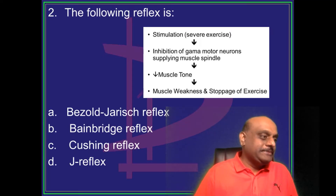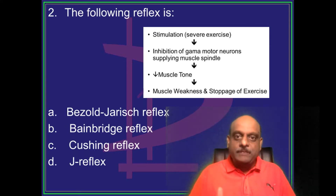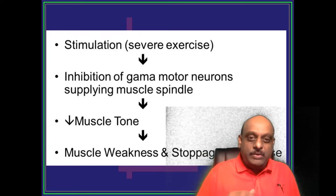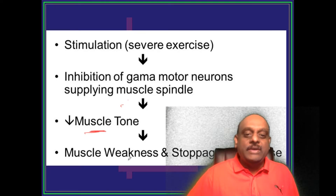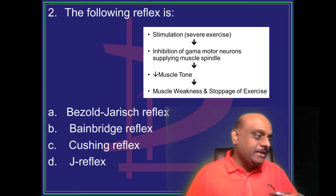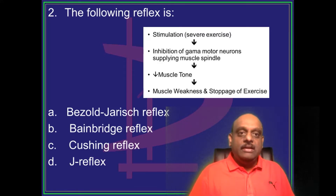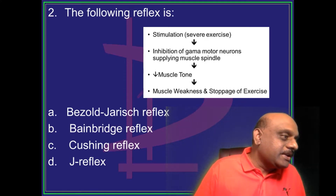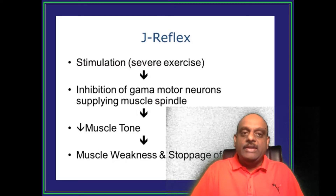A reflex is being shown to you. What is this reflex? The steps have been shown: during exercise, stimulation leads to inhibition of gamma motor neurons supplying the muscle spindle, which decreases muscle tone leading to muscle weakness and stoppage of exercise. Himasagar, Sharmishta, Roshan Yadav, Najneen — everybody is proposing the J reflex. Absolutely, it is called the J reflex.